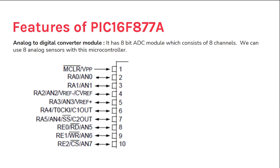The ADC module has 8 channels — AN0, AN1, AN2, AN3, AN4, AN5, AN6, AN7 — on pins 2 through 5 and 7, 8, 9, 10. These pins accept analog inputs directly; you can connect an analog temperature sensor to these pins. The ADC resolution is 10-bit.